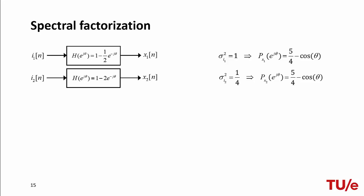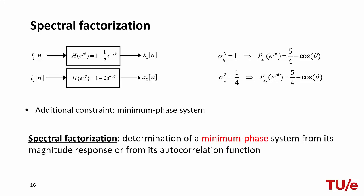The same output power spectral density is obtained by driving a system whose transfer function is given by 1 minus 2 e^(-jθ) by zero-mean white noise with input variance equal to 1/4. This example shows we need an additional constraint, and this constraint is that the system must be minimum phase. Therefore, spectral factorization can be stated as the search for a minimum phase system given its magnitude response or from its autocorrelation.